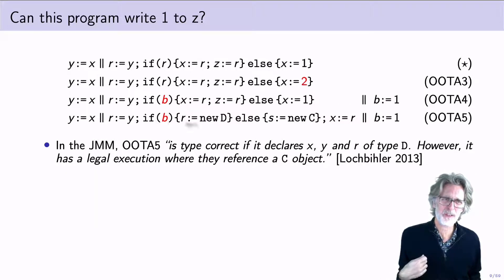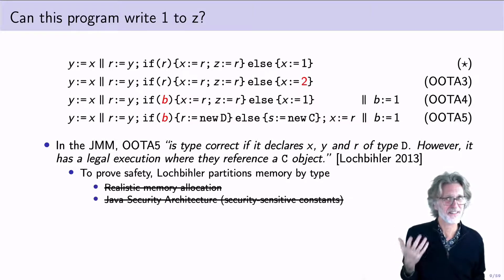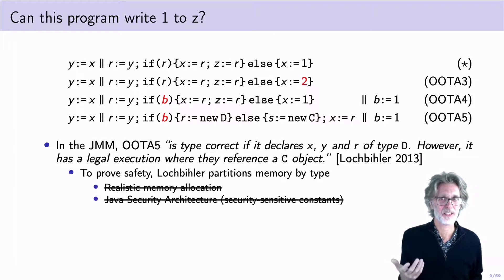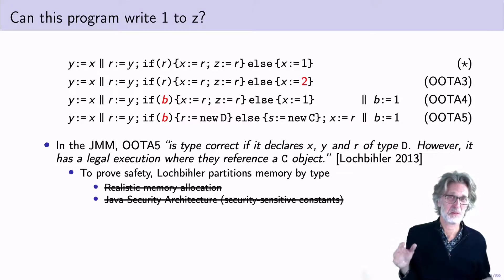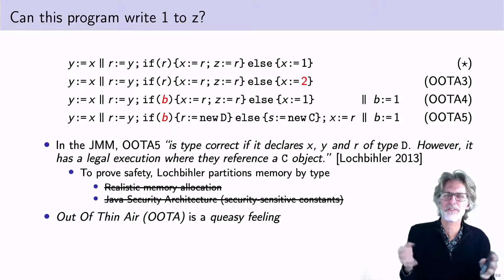Well, if you look at Lochbihler's study of the JMM, he has a very similar execution. And what he noticed is that this program is type correct if it declares x, y, and r to be of type D. However, it has a legal execution where they reference a C object. Now, this forced Lochbihler to partition memory by type, and that's not a very realistic assumption. Even with this observation, you might say, well, is it really that bad? And the problem here is that the whole idea of thin air executions is kind of poorly defined. It's a nebulous, queasy feeling you get.